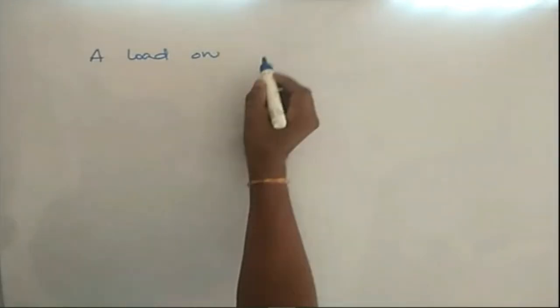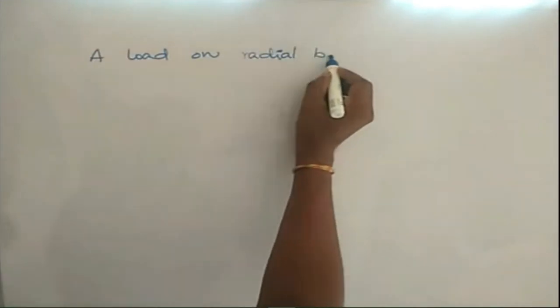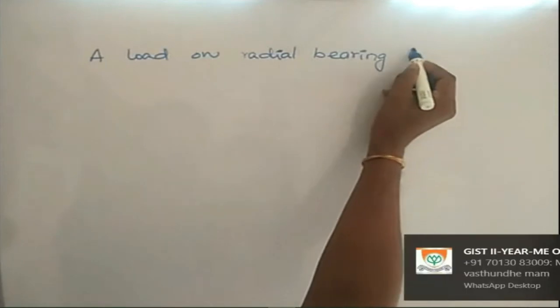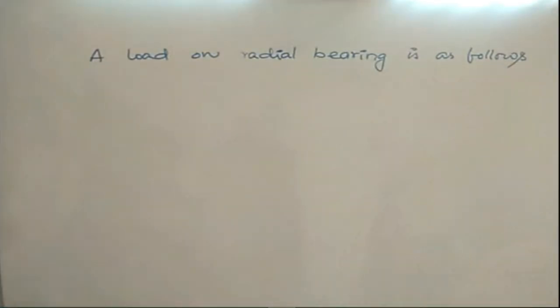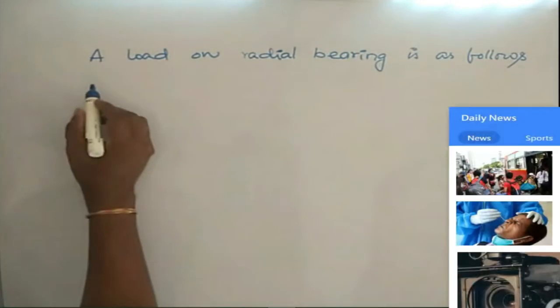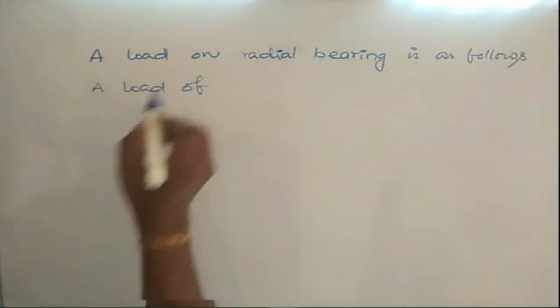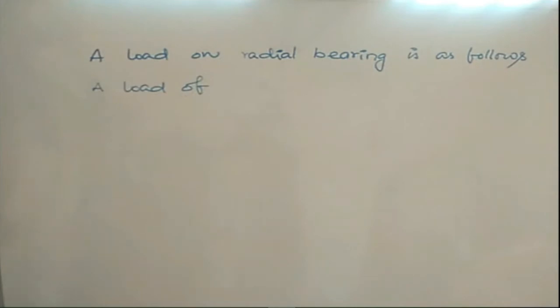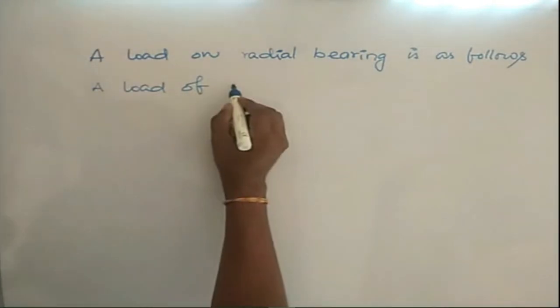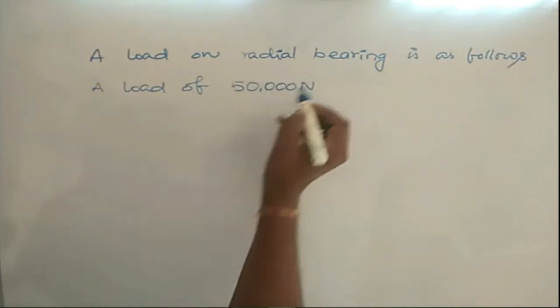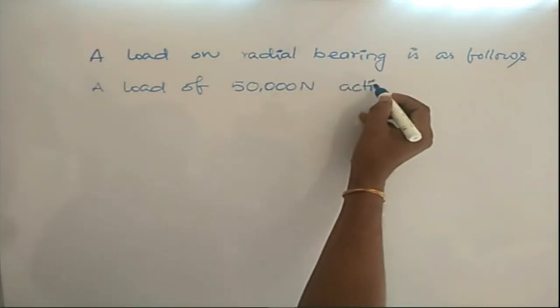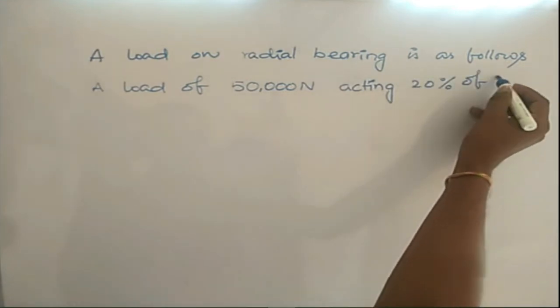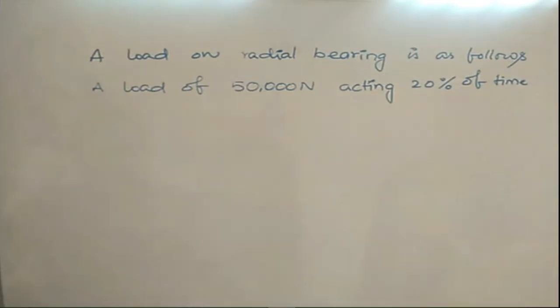The roller bearing problem is as follows: A load of 50,000 newtons acting 20% of time at 100 rpm.